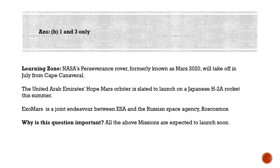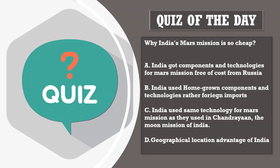These are Mars missions scheduled for launch between July and August. The Perseverance Rover is NASA's mission. ExoMars is a joint endeavor between the European Space Agency and the Russian Space Agency Roscosmos — its primary goal is to address whether life has existed on Mars, though its launch was recently postponed. The Hope Mars Orbiter belongs to the UAE.